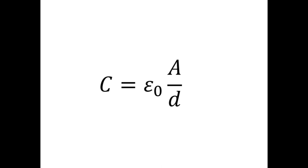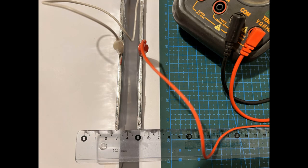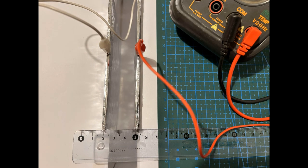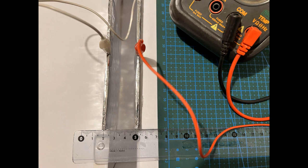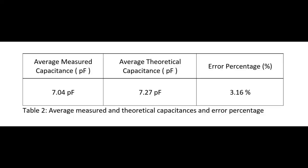Firstly, I'm calculating the theoretical capacitances using this formula and recording them onto the table. Then I set the distance to 1 cm at first. In each step, I'm increasing the distance by one more centimeter until I reach 5 cm. Each time I measure and record the experimental capacitance with a multimeter. Once I obtain the data, I calculate averages for both experimental and theoretical capacitances and use these numbers to find the error percentage.